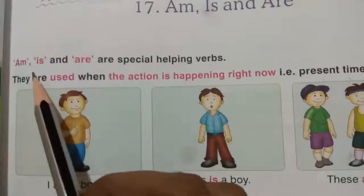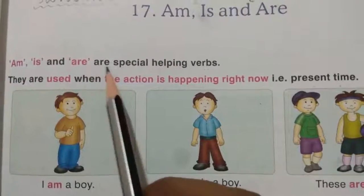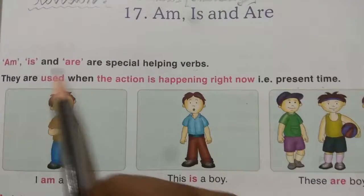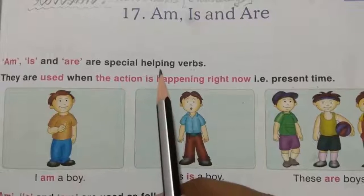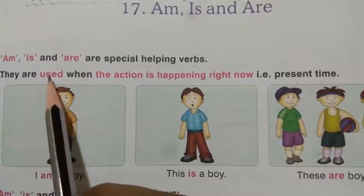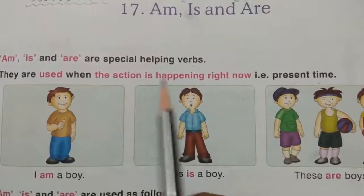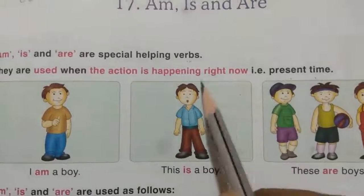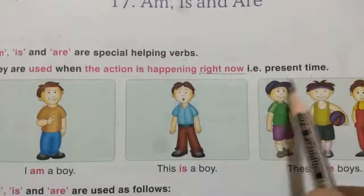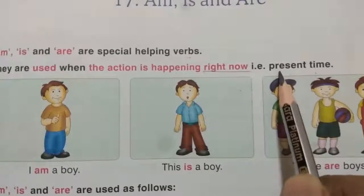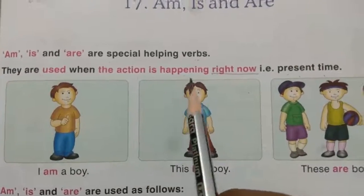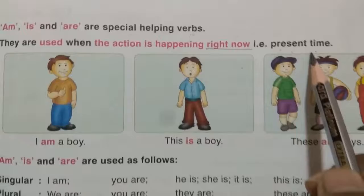See, Am, Is and Are are special helping verbs. What are these children? These are special helping verbs. Remember, they are used when the action is happening right now. Right now means present time. So they are used when the action is happening right now — that is present time.